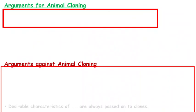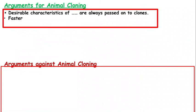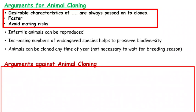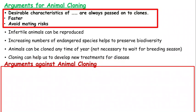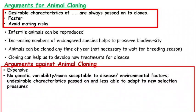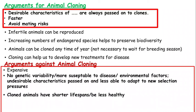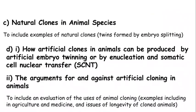Looking at arguments for and against cloning: arguments for include that desirable characteristics will always be passed on to the clones, it can be faster, and you can avoid mating risks. Arguments against include that it can be expensive, there is no genetic variability, individuals are more susceptible to disease due to limited genetic biodiversity, they can have shorter lifespans, and the success rate can be poor.